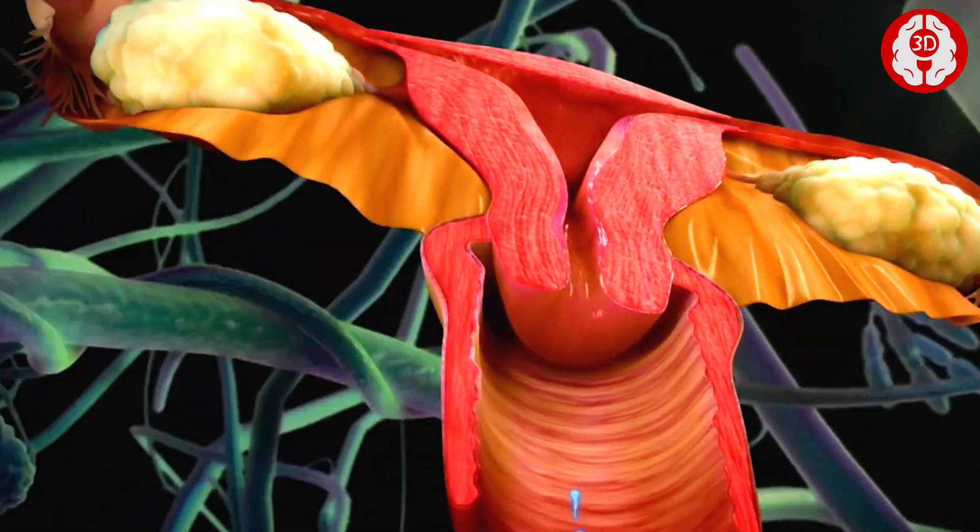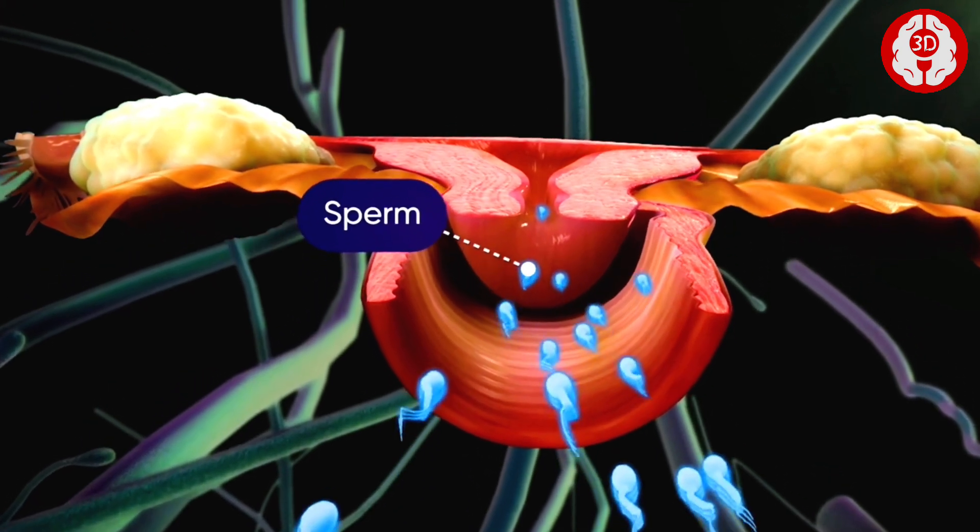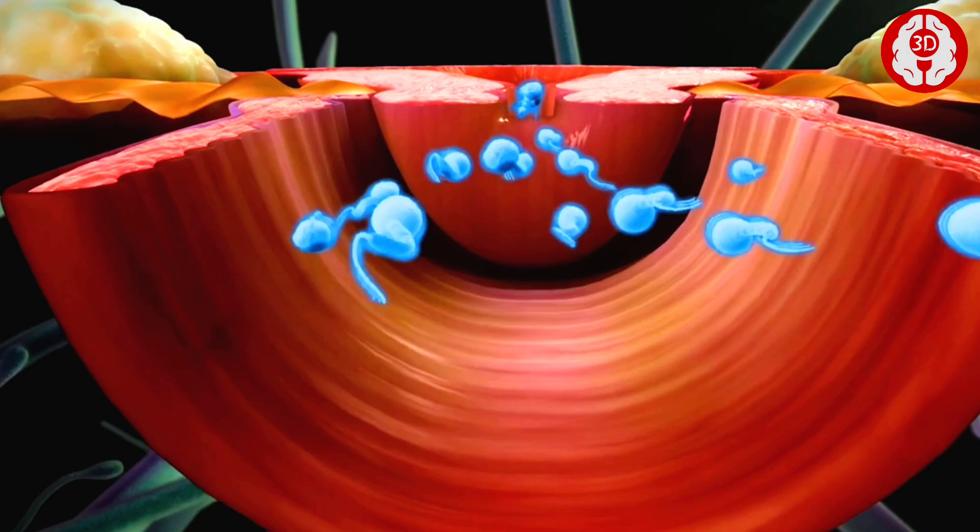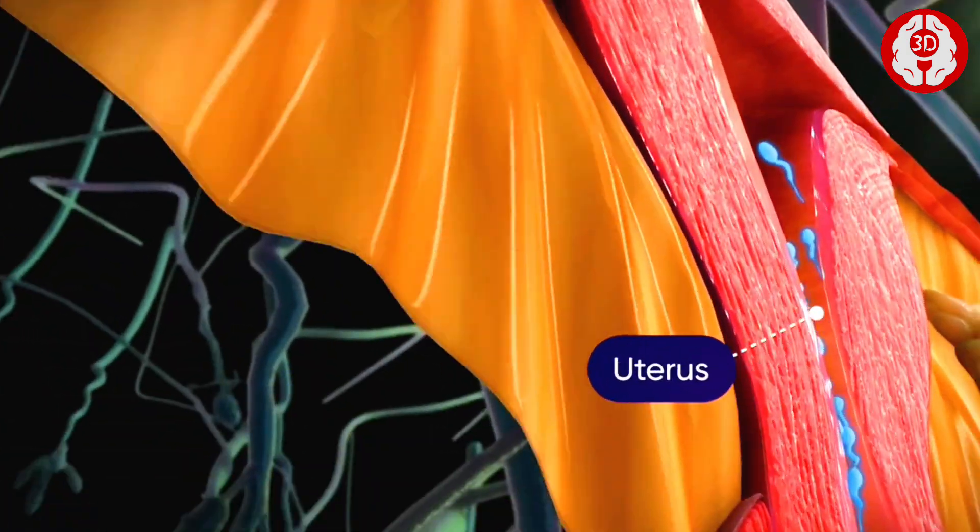As the sperms enter the vagina, they swim through the cervix by a wriggling movement of their tail. They pass through the uterus and enter the oviduct.